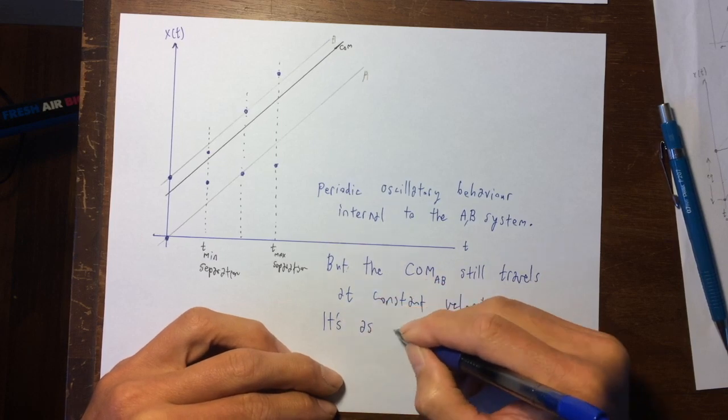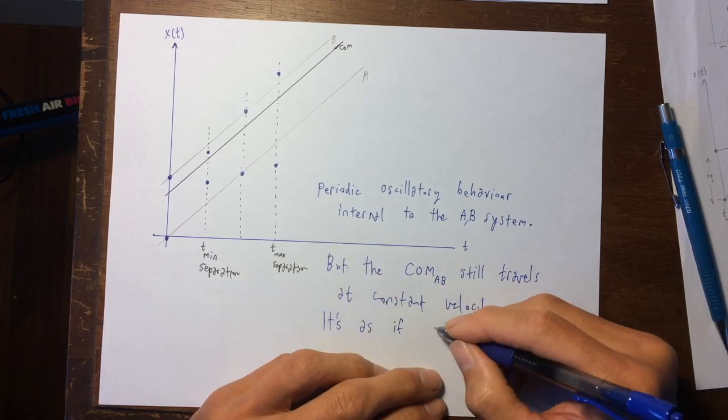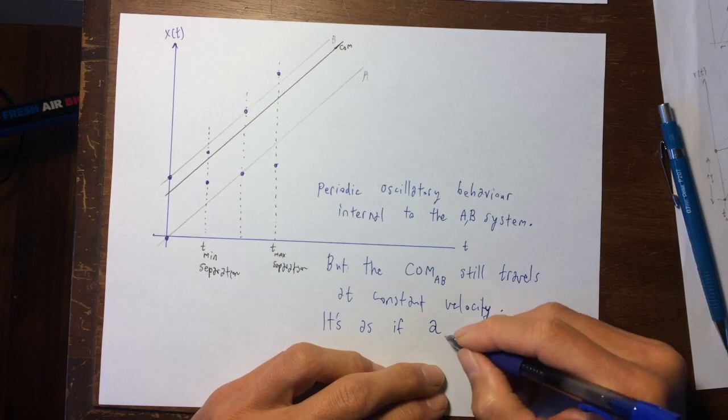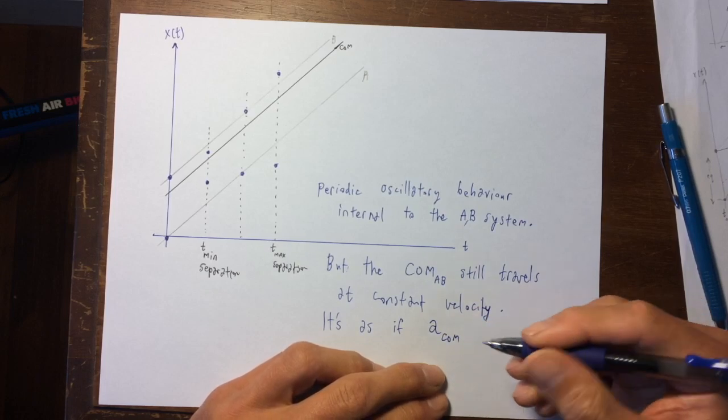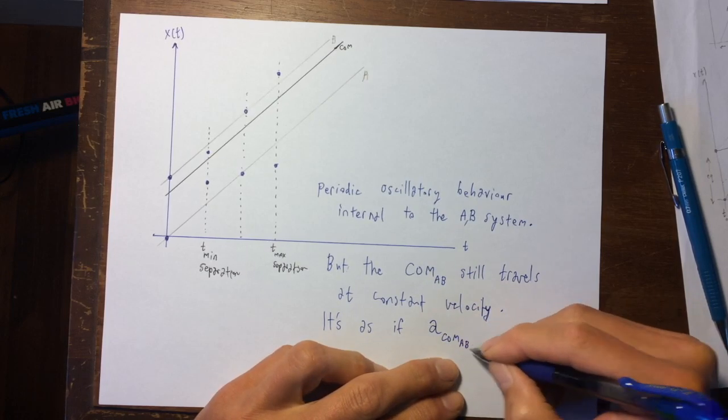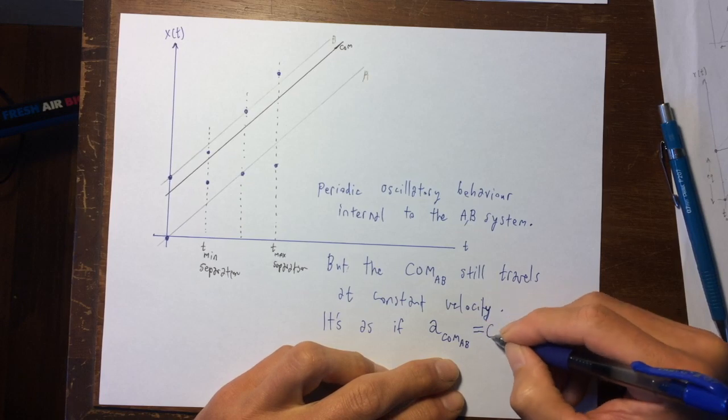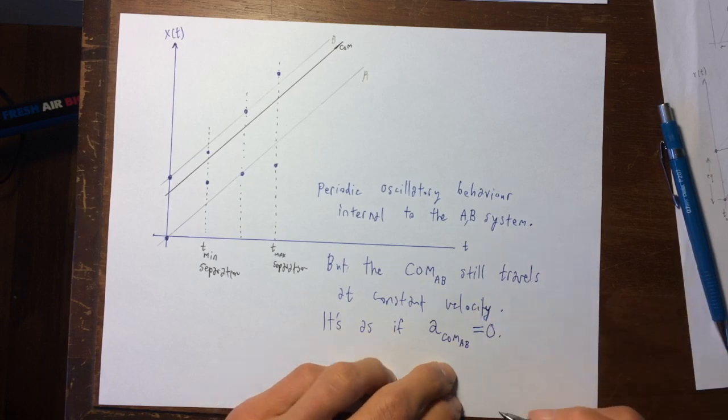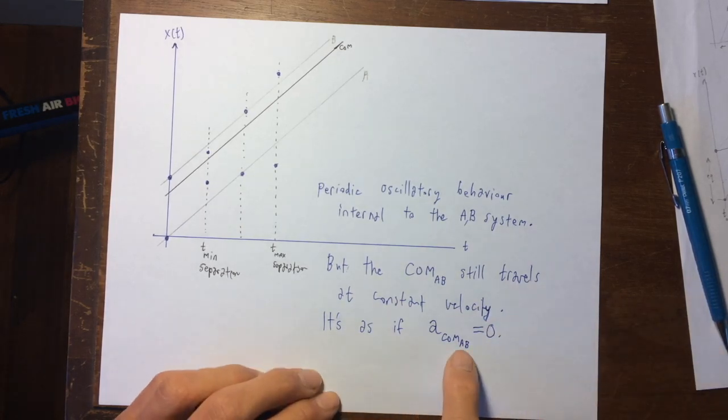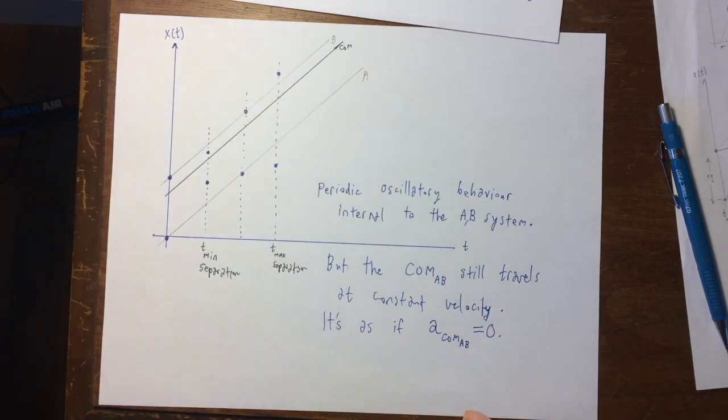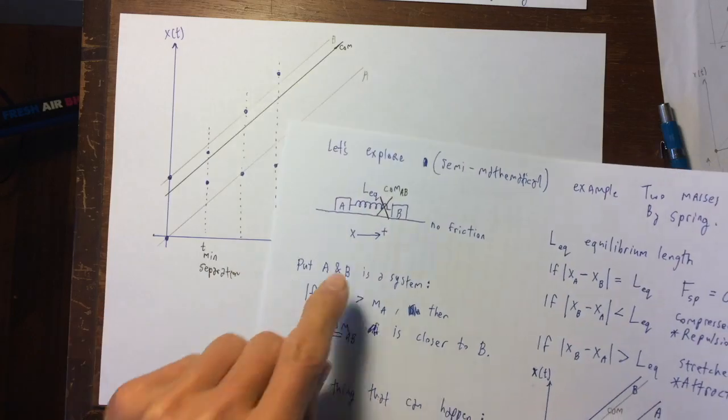It's as if the acceleration of the center of mass of the AB system equals zero. So there is an acceleration that equals zero even though there is definitely spring force.